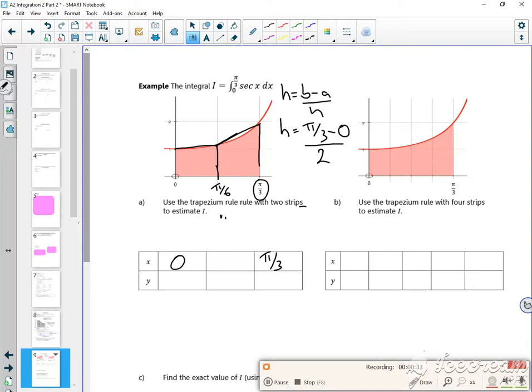Over n, which was 2 because I've got 2 trapezia. I know it's π/6, but if I didn't, I can put it in my calculator and it will give me π/6.